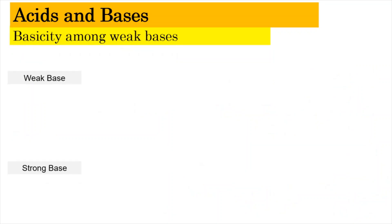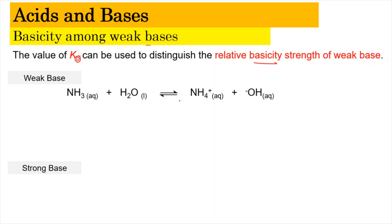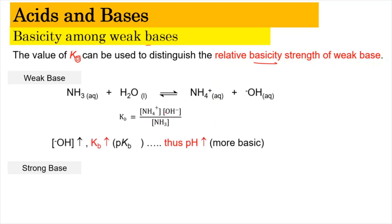Now similarly, we're going to look into the basicity among the weak bases. The value of Kb can be used to distinguish relative basicity. For ammonia dissolving in water, it forms the ammonium ion NH4⁺ as well as the hydroxide ion. For the base we're interested in the hydroxide ion. The Kb expression is Kb = [NH4⁺][OH⁻] / [NH3]. When the hydroxide ion concentration increases, the Kb value increases, and Kb and pKb will be inversely proportional, so there's a downward arrow.